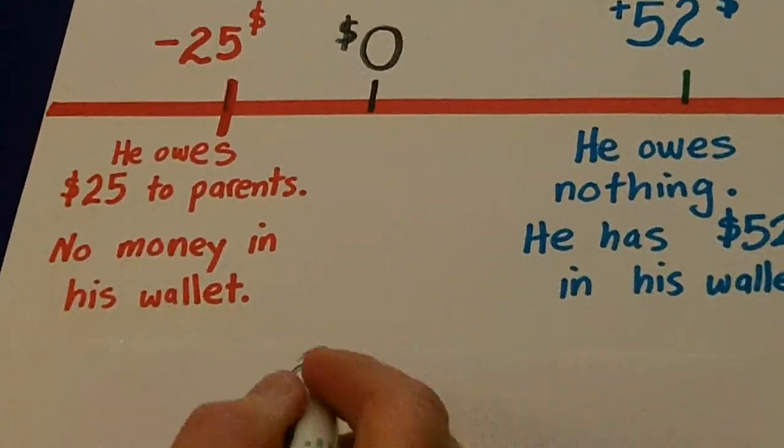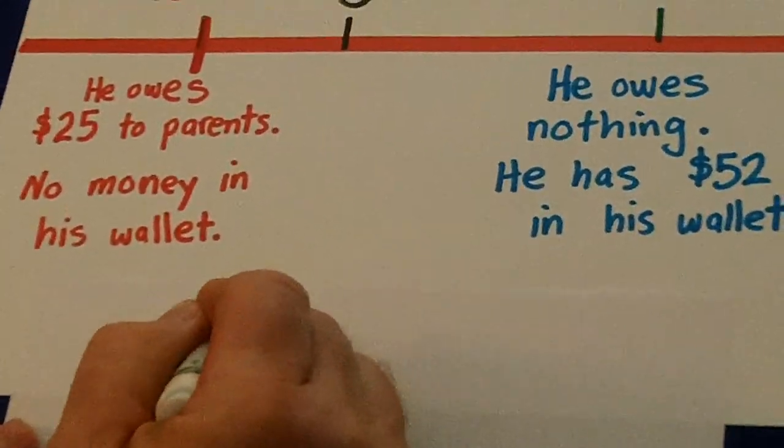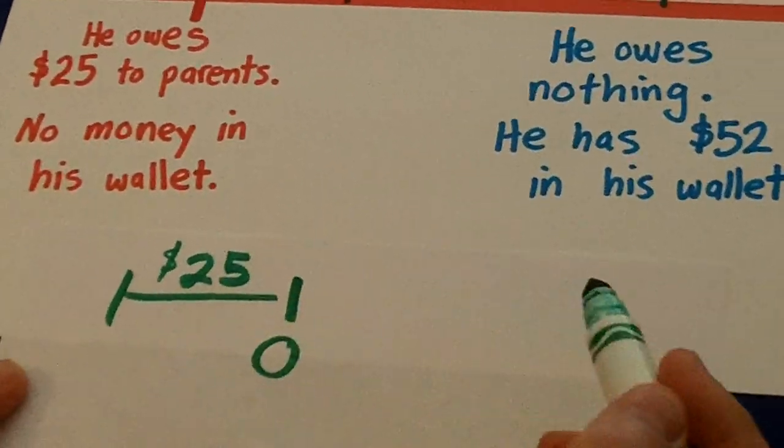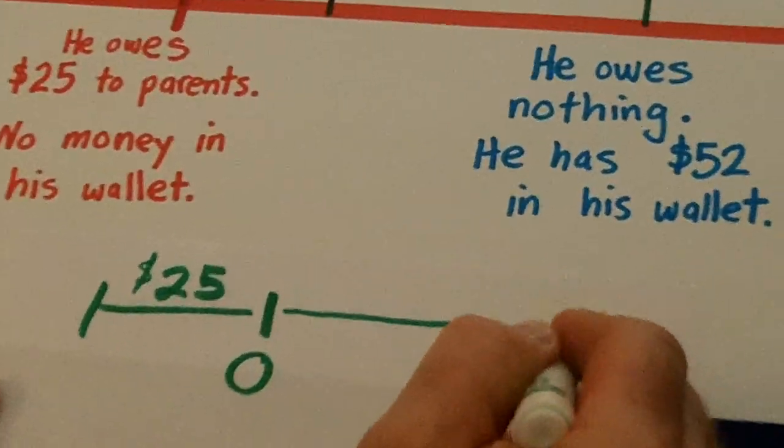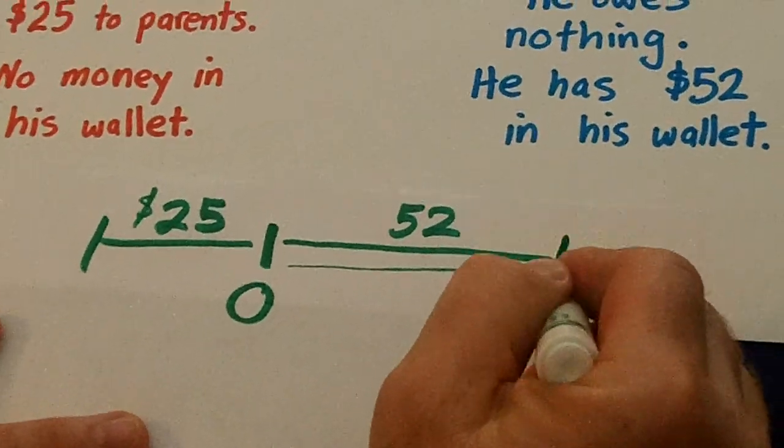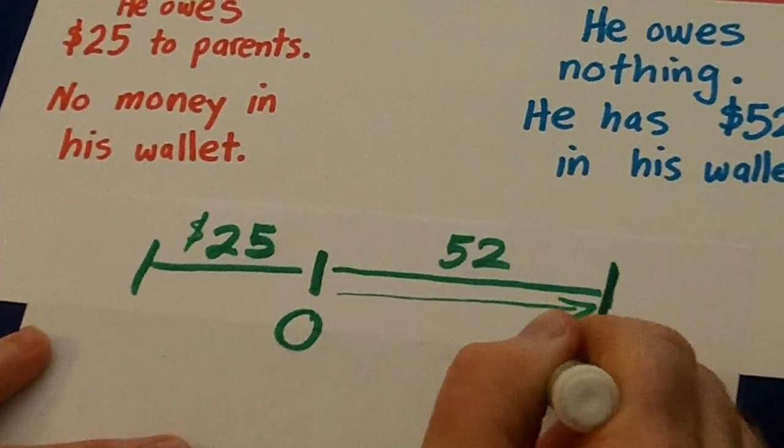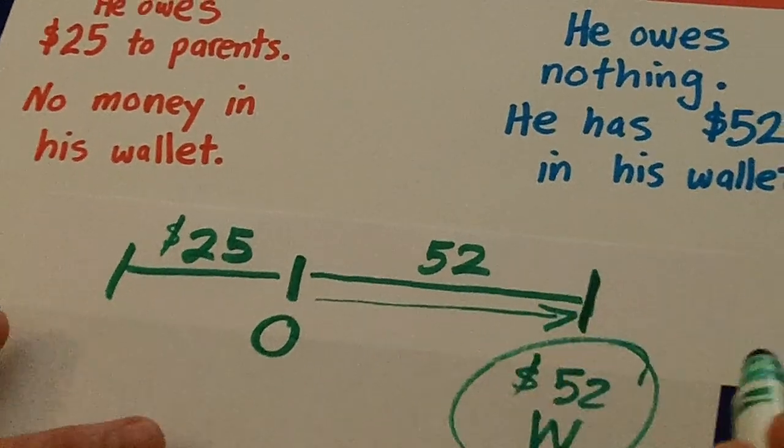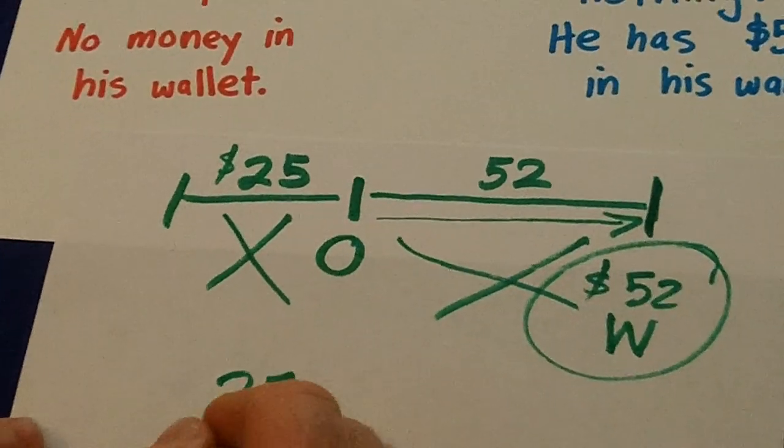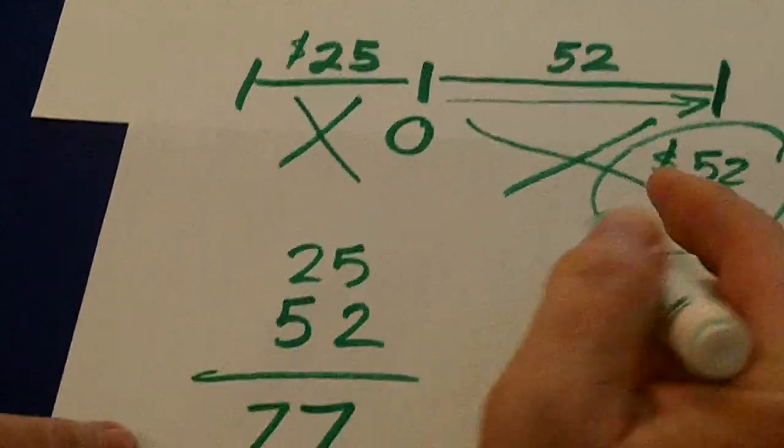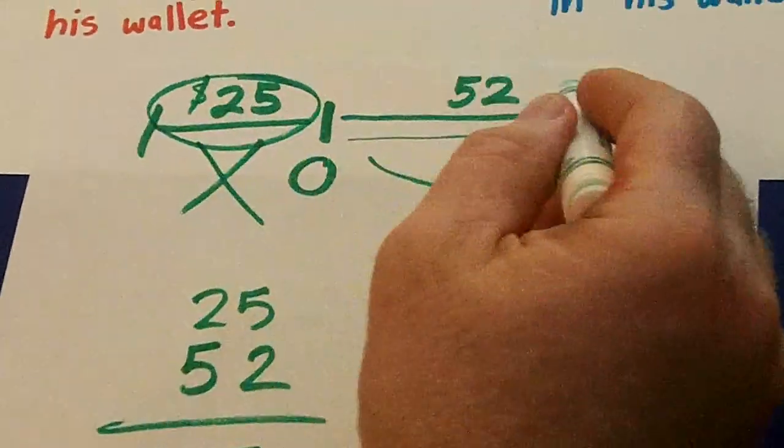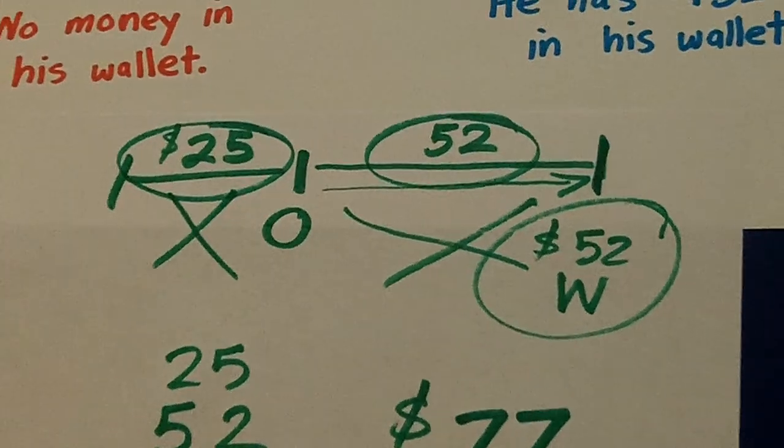Once again, here is 0. He had to earn $25 to pay off that debt. So there's 25 bucks he earned. Then, he earned another $52 to get out of debt and then go above 0, because now he has $52 in his wallet. So we need to add paying off the debt, $25, to getting money in his wallet. He earned $77 to go from $25 debt to $52 out of debt.